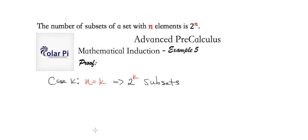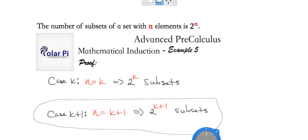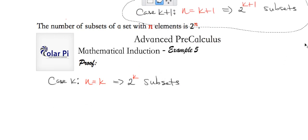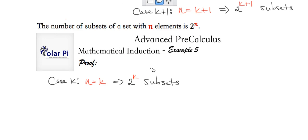So here, and so in the final step, case k plus one, where we let n equal k plus one, what we need to show, when n equals k plus one, is that the set with k plus one members has 2 to the k plus one subsets, right? 2 to the k plus one subsets. All right, this is what we need to show.